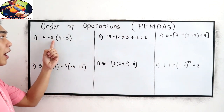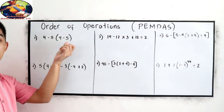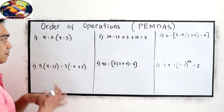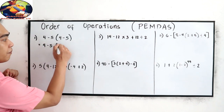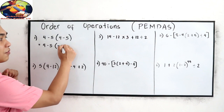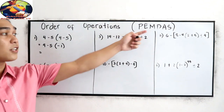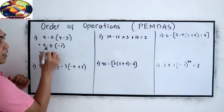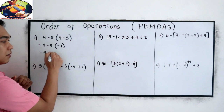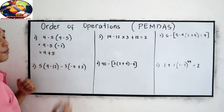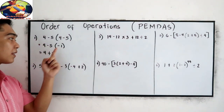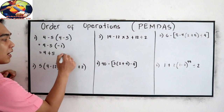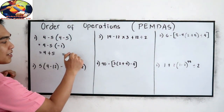Number 1: 4 minus 5 times quantity 4 minus 5. Following PEMDAS, simplify first inside the parentheses: 4 minus 5 is negative 1. Next, negative 5 times negative 1 — negative times negative is positive — so that becomes positive 5. Our final answer is 4 plus 5, which equals 9.